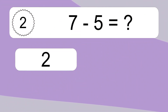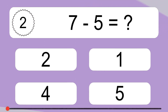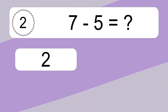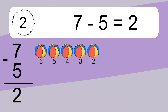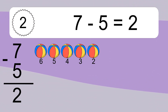7 minus 5 equals what? 7 minus 5 equals 2. Let's count it: 6, 5, 4, 3, 2.